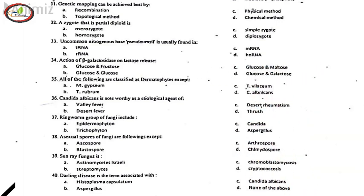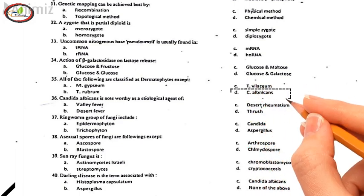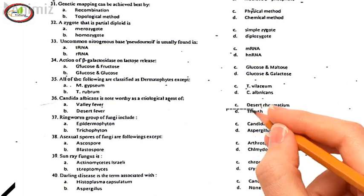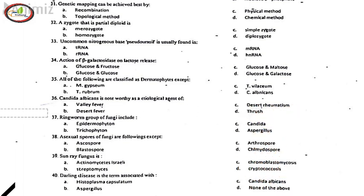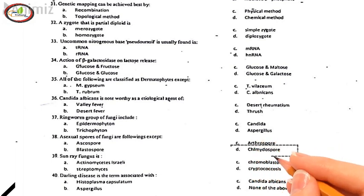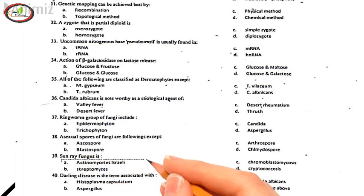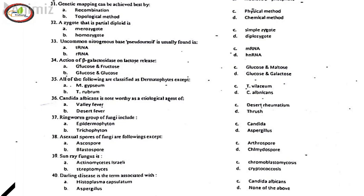35. All of the following are classified as dermatophytes except, D. C. Albicans. 36. Candida albicans is noteworthy as an etiological agent of, D. Thrush. 37. Ringworm group of fungi includes, B. Trichophyton. 38. Asexual spores of fungi are the following except, D. Chlamydospore. 39. Sunray fungus is, A. Actinomyces israelii. 40. Darling disease is the term associated with, A. Histoplasma capsulatum.